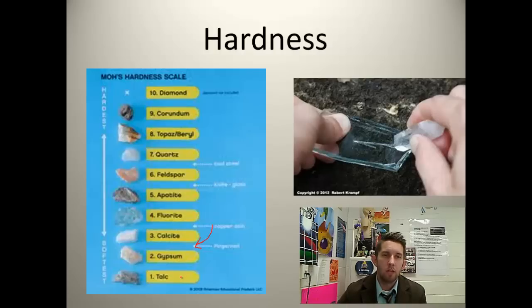It will scratch talc because talc has a hardness of 1. But it won't scratch calcite. Instead, calcite is harder, so it will scratch our fingernail, because it has a hardness of 3. The hardest mineral is the diamond. It has a hardness of 10. It will scratch all of these.